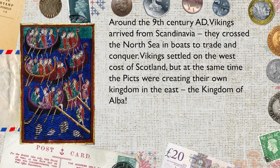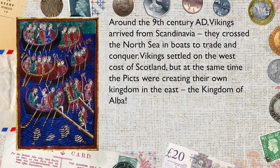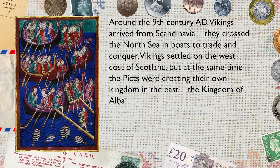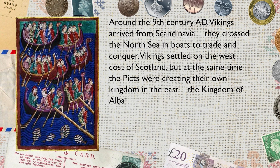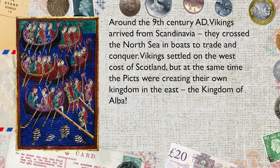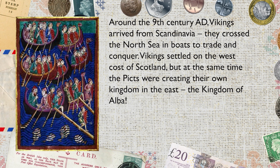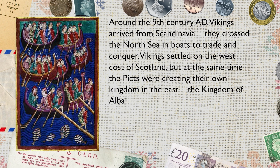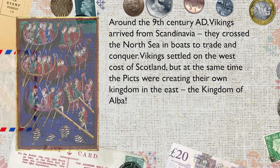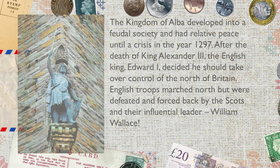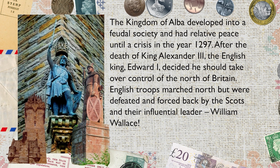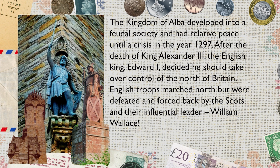Around the 9th century AD, Vikings arrived from Scandinavia. They crossed the North Sea in boats to trade and conquer. Vikings settled on the west coast of Scotland, but at the same time the Picts were creating their own kingdom in the east: the Kingdom of Alba. The Kingdom of Alba developed into a feudal society, and had relative peace until a crisis in the year 1297.